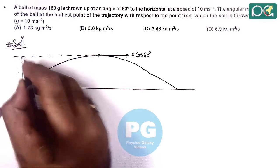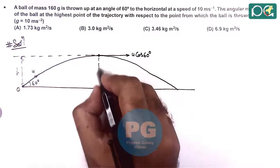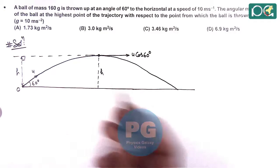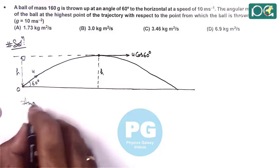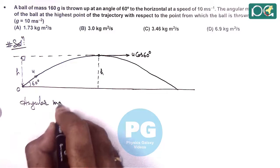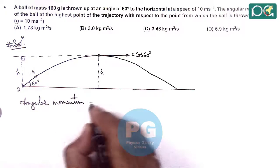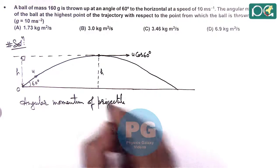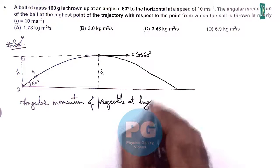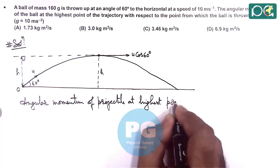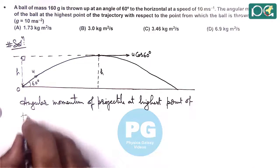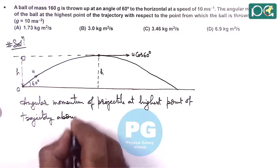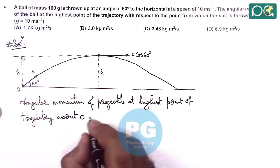If this height is h which is the perpendicular distance we can calculate the maximum height of projectile by the formula we know. So here we can write angular momentum of projectile at the highest point of trajectory about O.